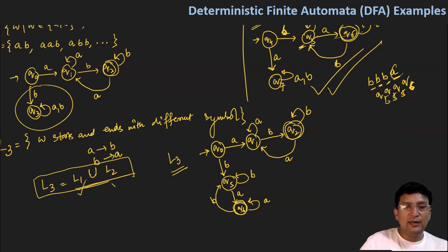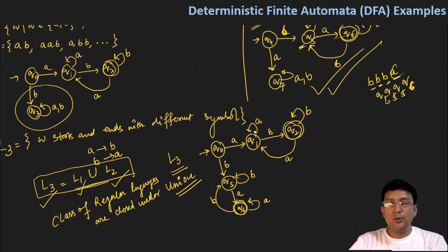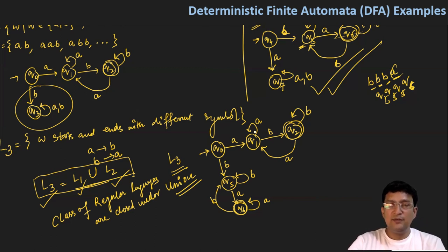It means if L1 is regular and L2 is regular, L3 will also be regular. This verifies the statement that the class of regular languages are closed under union. What we have seen earlier in the previous lectures is that the class of regular languages are closed under concatenation, and the class of regular languages is closed under union also, as we have seen in this lecture. We will once again see new concepts related to the DFA in the subsequent lectures.